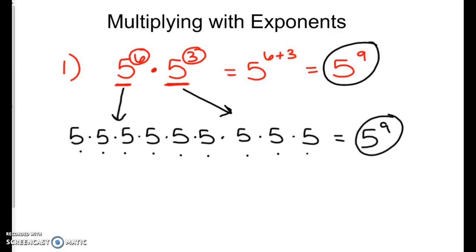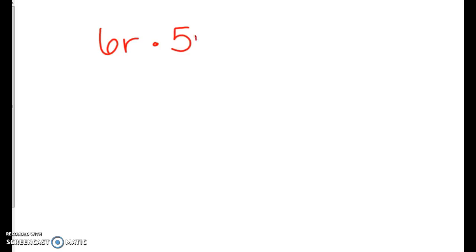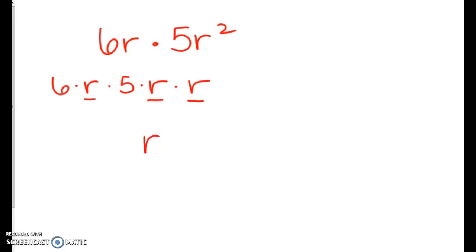Let's move on to a little bit harder one. Let's do six r times five r to the second. I'm going to start out by writing it out in expanded form. In expanded form I'd have six times r times five times r times r. Then we just add up all of the r's — we end up with three of them, so we have r to the third power.